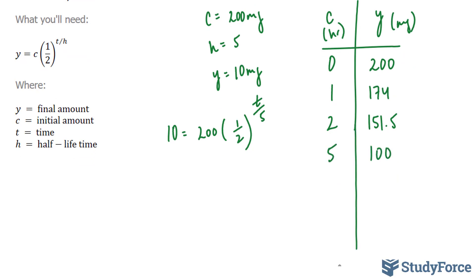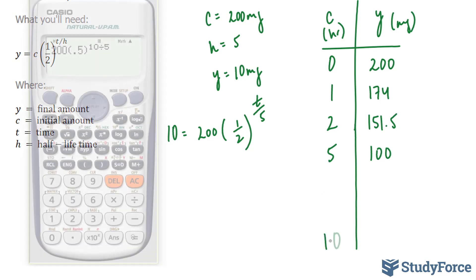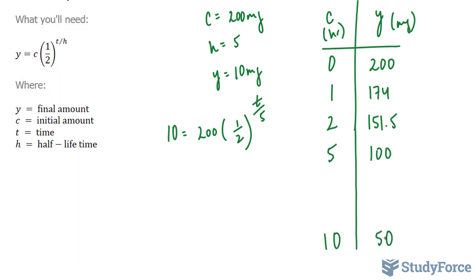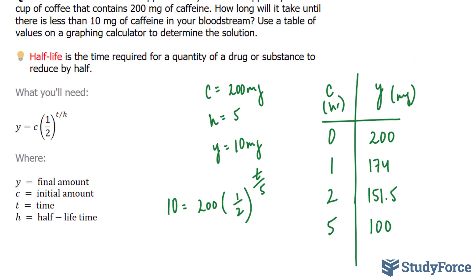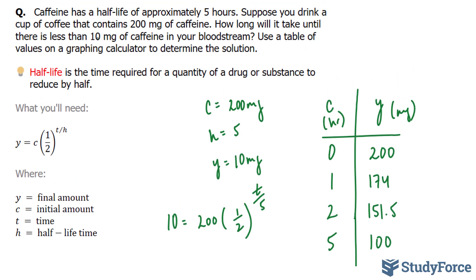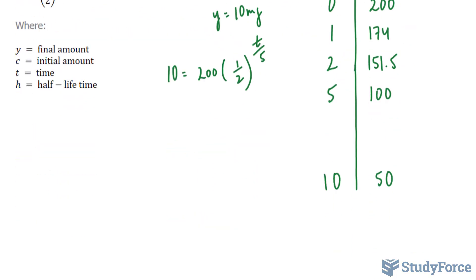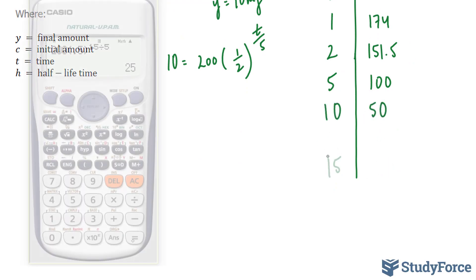Now let's skip a few more. Let's jump all the way to 10. After 10 hours, there will be 50 milligrams. But remember, they want us to find out when it will be less than 10. So we've got to go even further. Let's try 15. At 15, 25 milligrams.